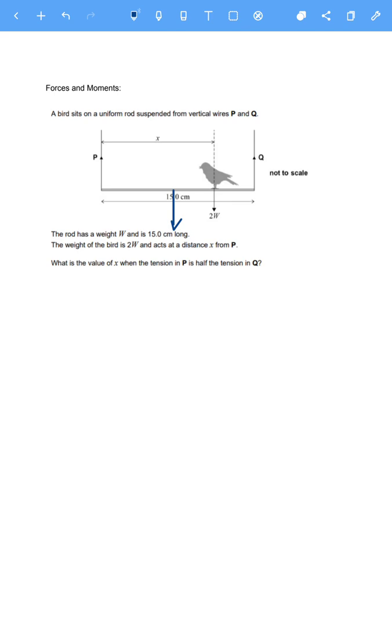The weight of the bird is 2W and acts at a distance X. What is the value of X when the tension in P is half the tension in Q? So straight away looking at that, I would write that the tension in P is T, and Q would be 2 times the tension.